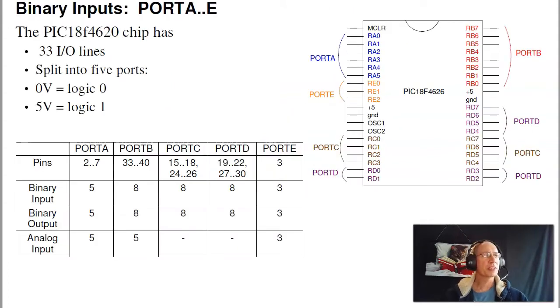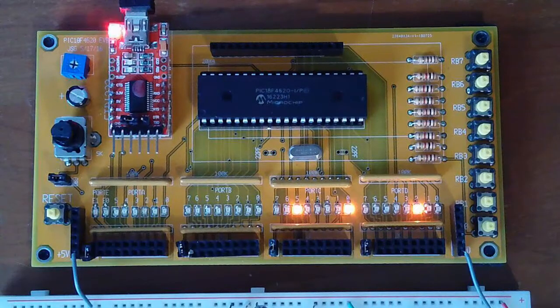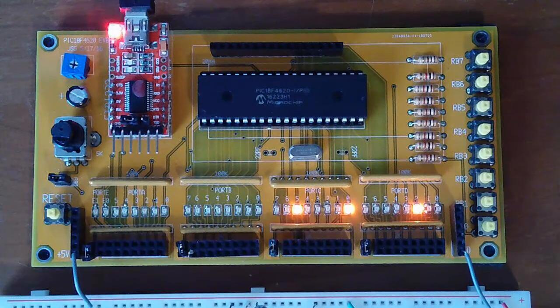Now the PIC processor has 33 I/O pins. They're organized into five ports: port A, B, C, D, E. Those are split out on your breadboard as port A, B, C, and D.